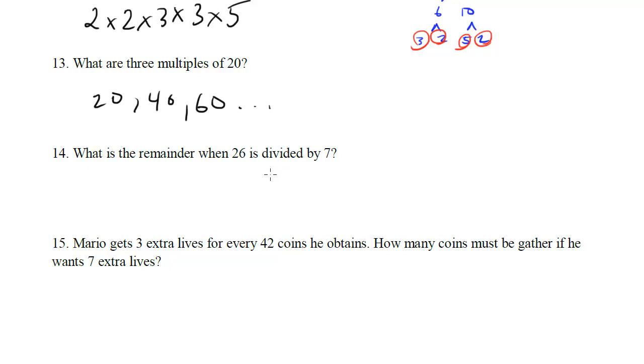What is the remainder when 26 is divided by 7? This is something you learned way back in elementary school. 7 goes into 26. We'll do this the longer way. How many times does 7 go into 26? It goes in 3 times. So this becomes 21.